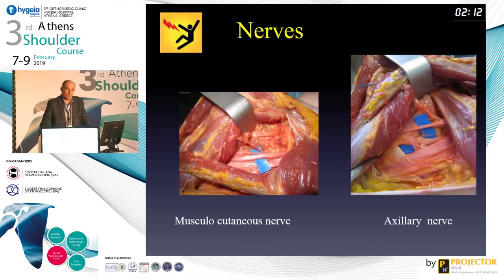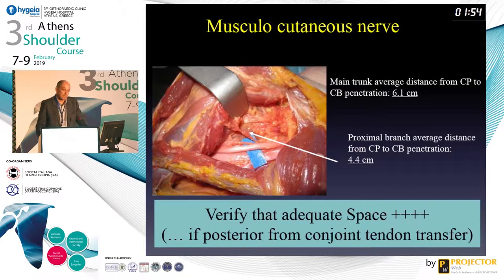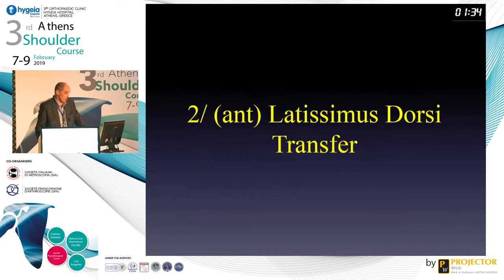If you want to go underneath the conjoint tendon, take care about the musculocutaneous nerve and the axillary nerve, because there are anatomic variations. You have to release under the coracoid process and under the conjoint tendon, and you can damage this nerve, so be careful. If you want to take all the pec major and go underneath the conjoint tendon, it could be too bulky and you can create some damage. There are also accessory branches coming to the conjoint tendon from the musculocutaneous nerve.